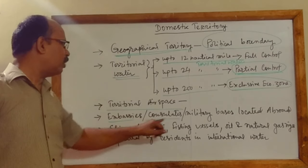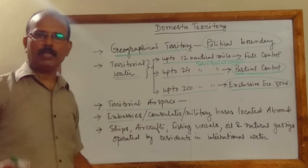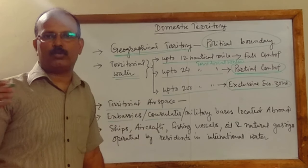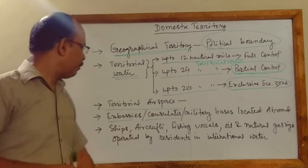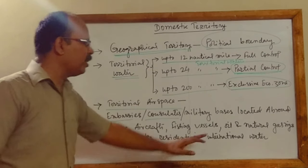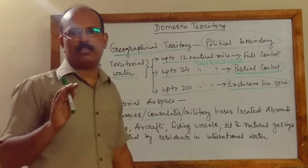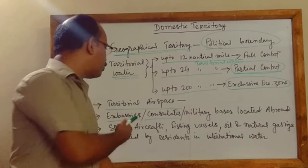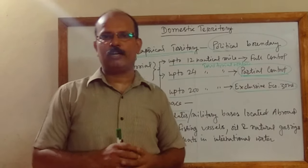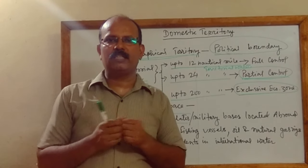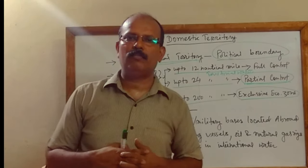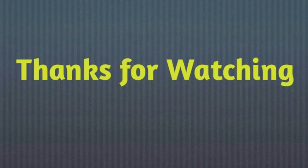Indian embassies, consulates, and military bases located abroad are also considered domestic territory of India. Additionally, ships, aircraft, fishing vessels, and oil and natural gas rigs operated by residents in international waters are considered domestic territory of our country. These are the basic concepts of normal residence and domestic territory, and understanding them properly will help in estimating national income correctly.